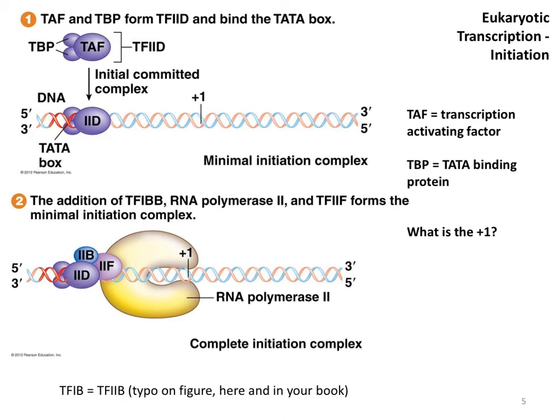Let's look at the steps of eukaryotic transcription, starting at the beginning — which is the most complex part — the initiation of transcription. Remember that transcription factors, shown here in purple, replace the sigma factor that works in prokaryotic transcription. Here we see the transcription factors TAF and TBP binding to form a complex called TF11D. This complex binds to the TATA box in the core promoter region. Now we are committed to transcription — we have what is often referred to as the minimal initiation complex.